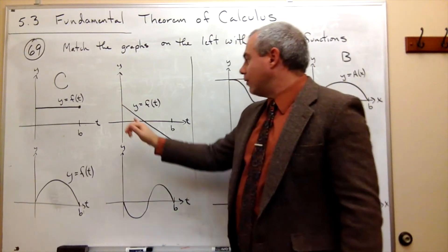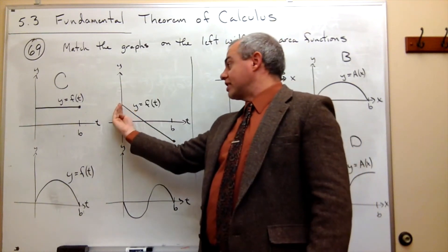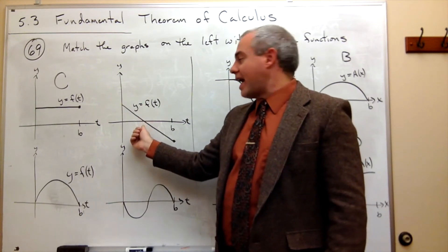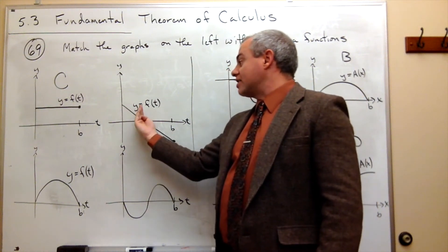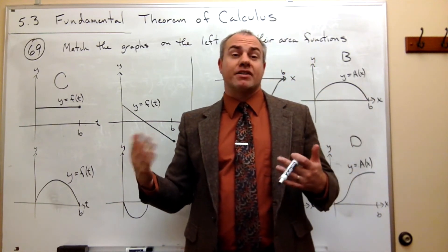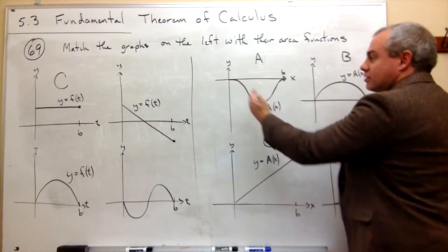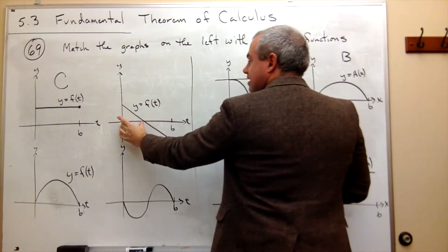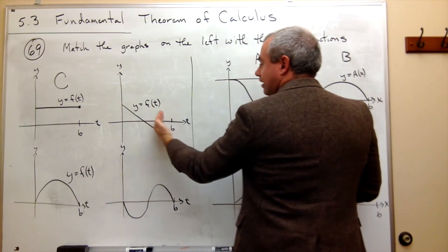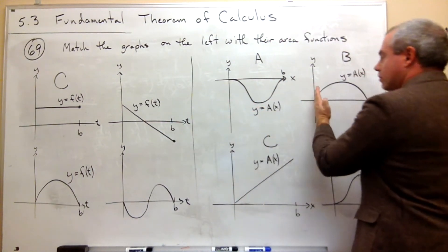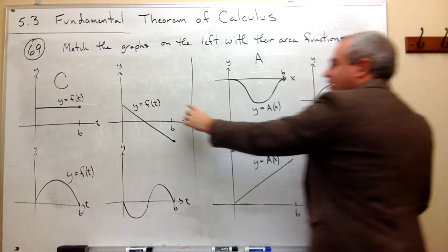What about the second graph? I've got some positive area being picked up, so the area function should be gaining ground, getting more and more area until about halfway. At halfway it starts losing area until it gets to b. So it gains positive area, then loses area and maybe goes back to zero. Does something end at zero or nearby? This one does. But this one is negative area the whole way. This one says I'm getting more and more area until the midway point, and then less and less area — that's perfect. So B is this graph.